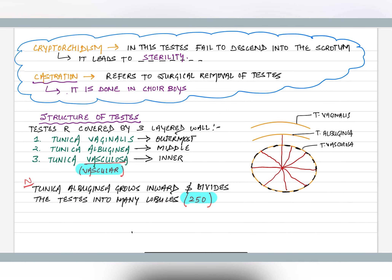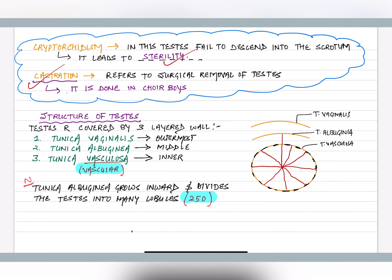Two important terms: one is cryptorchidism — 'crypt' means hidden, 'orc' means testis. This is the condition where testis fail to descend from the abdomen to the scrotum. In humans, if testis remain in the abdomen, they never get the lower temperature required for spermatogenesis, so spermatogenesis will not occur. Since gametes are not produced, this condition leads to sterility. The second term is castration — surgical removal of the testis — which also leads to sterility.